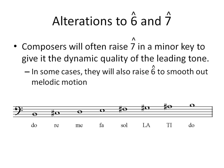To reinvigorate the dynamic qualities of scale degree seven, composers will sometimes raise it a half step, transforming te into ti. This creates a large gap between scale degrees six and seven, and so occasionally composers will also raise scale degree six to smooth out the melodic motion. Le thus becomes la.